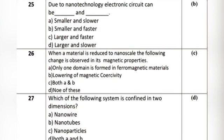Question 2: When a material is reduced to nanoscale, the following change is observed in its magnetic properties. Option A: only one domain is formed in ferromagnetic materials. Option B: lowering of magnetic coercivity. Option C: both A and B. Option D: none of these. The correct answer is Option C: both A and B.